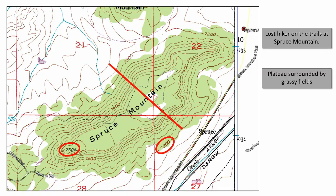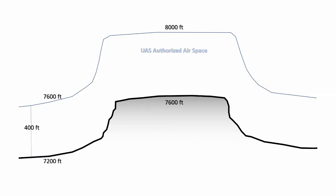Let's take a look at the cross section of that plateau. Starting at 7,200 feet, going all the way up to 7,600 feet. With FAA regulations in mind, we can fly 400 feet above ground level. So that starts us at 7,600 feet, rising all the way up to 8,000 feet.